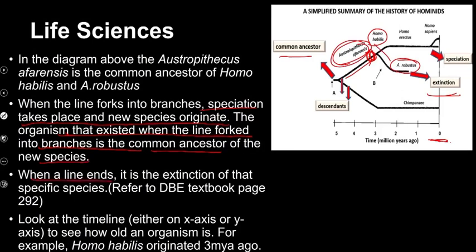When a line ends, it indicates the extinction of that specific species. You can look in the DBE textbook — it explains it very nicely. For example, Australopithecus robustus: the line ends before the present, so that species has become extinct. We can look at the timeline on the x-axis or y-axis to determine how old an organism is. For example, Homo habilis — the speciation event occurred at around three million years ago.